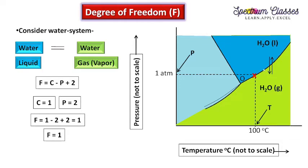For example, if I choose a point on this equilibrium curve and specify the temperature as 100 degrees centigrade, then the corresponding pressure can be measured and will be equal to 1 atmosphere. So if we are at any point on this curve, we need to specify only one of the parameters, either temperature or pressure. This system has 1 degree of freedom along this equilibrium line.